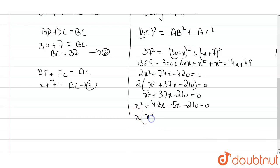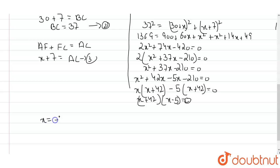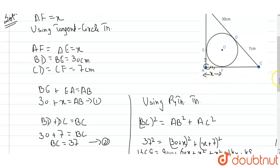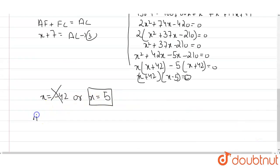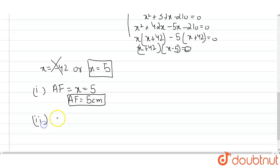Factoring: x(x plus 42) minus 5(x plus 42) equals 0, so (x plus 42)(x minus 5) equals 0. This gives x equals minus 42 or x equals 5. Since a side of a triangle cannot be negative, x equals 5. Therefore, AF equals 5 centimeters.